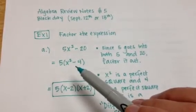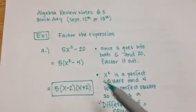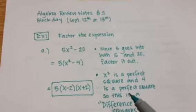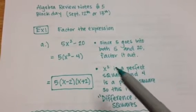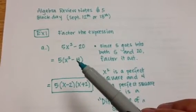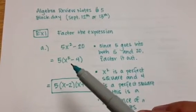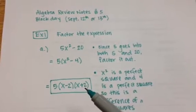And then, x squared minus 4 is a special factoring pattern. Because x squared is a perfect square and 4 is a perfect square, this is called a difference of squares. And so when I factor a difference of squares, I take the square root of both of these guys, so x and 2, and I say x minus 2 times x plus 2.